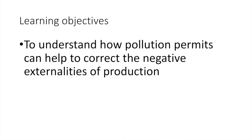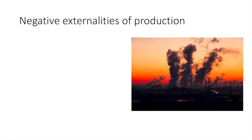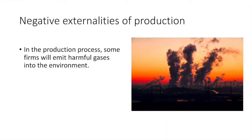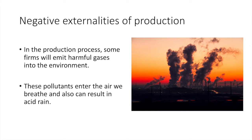In this video, we'll learn how pollution permits can help to correct the negative externalities of production. In our discussion on negative externalities, we learned that in the production process, some firms will emit harmful gases into the environment. These pollutants enter the air we breathe and can also result in acid rain. The impact of the firm's pollution is an external cost to third parties. To address this, the government can pursue a market-based intervention such as pollution permits. This is in contrast to command and control systems, which rely primarily on regulation as opposed to market-based systems.